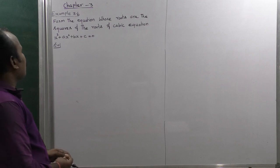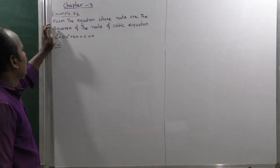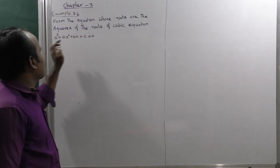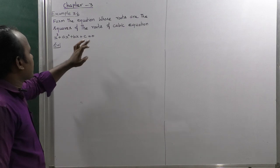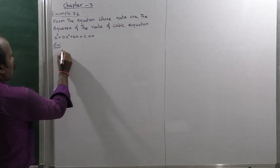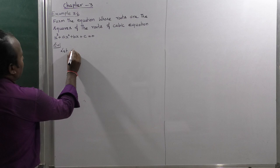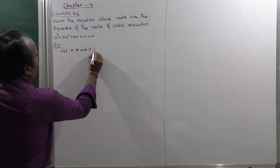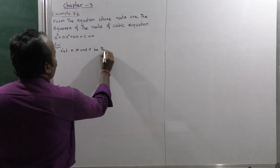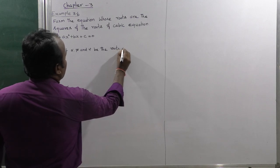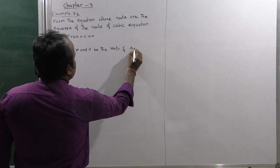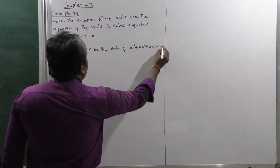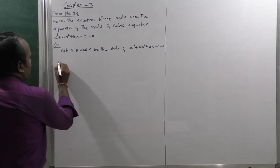Chapter 3, Example 3.6. Form the equation whose roots are the squares of the roots of the cubic equation x³ + ax² + bx + c = 0. Let alpha, beta, and gamma be the roots of the equation x³ + ax² + bx + c = 0.